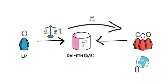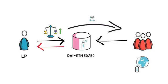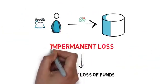At this point, if the LP decides to withdraw their liquidity, the impermanent loss becomes permanent.